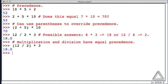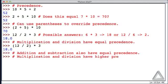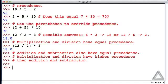Okay, multiplication and division have equal precedence, but addition and subtraction also have equal precedence. We already know that multiplication has higher precedence than addition, so this implies that multiplication and division have higher precedence than addition and subtraction.